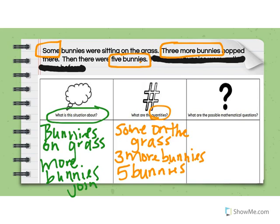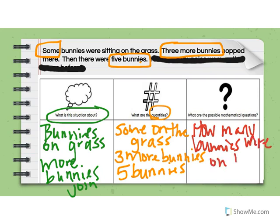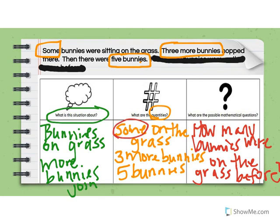So let's think about what could the question be asking. If I have three more, could this be: how many bunnies were on the grass before? Because we're looking for that 'some bunnies' — that 'some' word. So let's see what the question says. How many bunnies were on the grass before? Awesome.